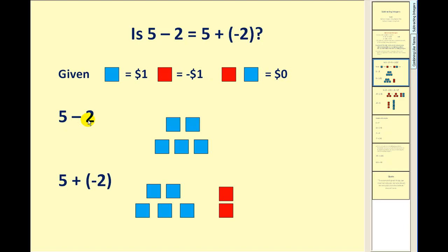So if we take a look at 5 minus 2, this is the model for positive 5 or $5, and of course subtraction is like takeaway. So if I take away 2 of these positive dollars, it's very easy to see that what remains is 3. 5 minus 2 is obviously 3.